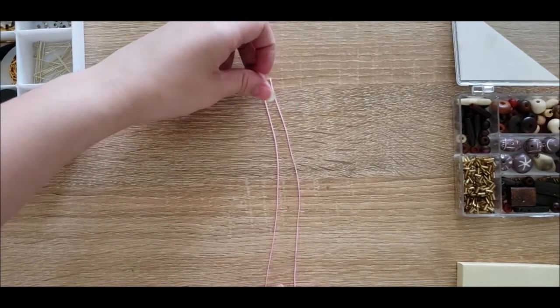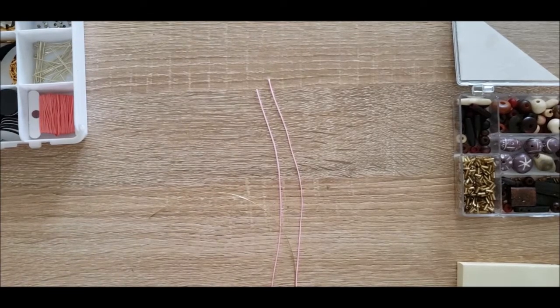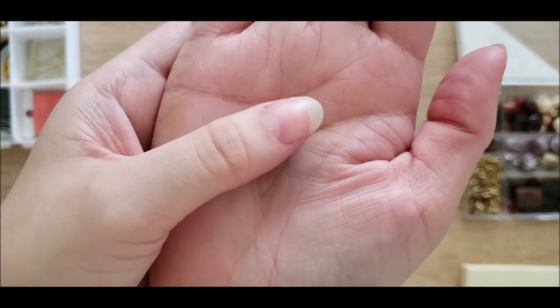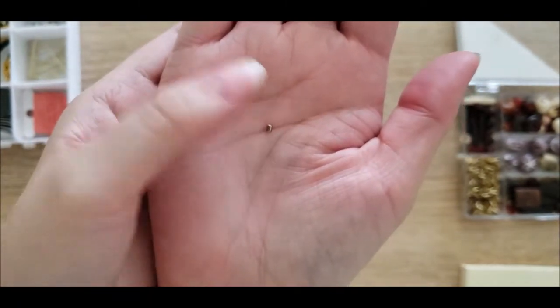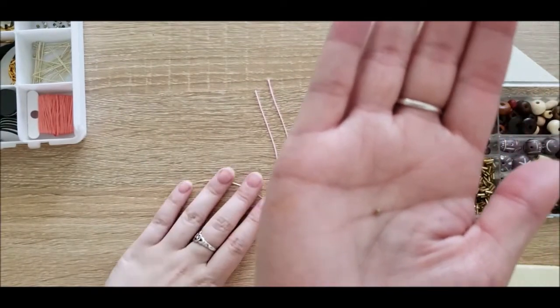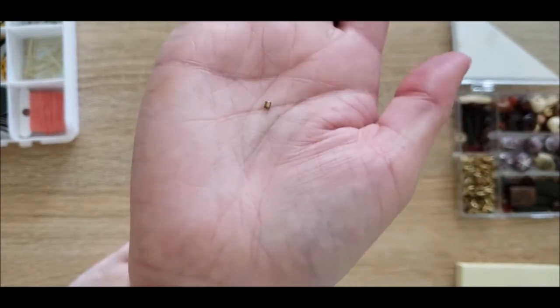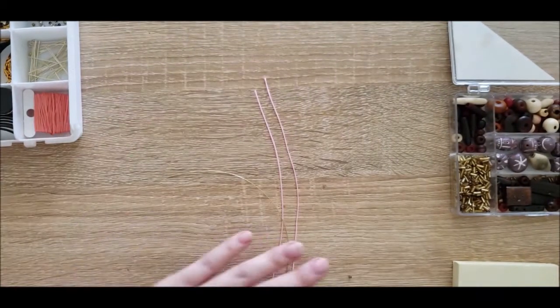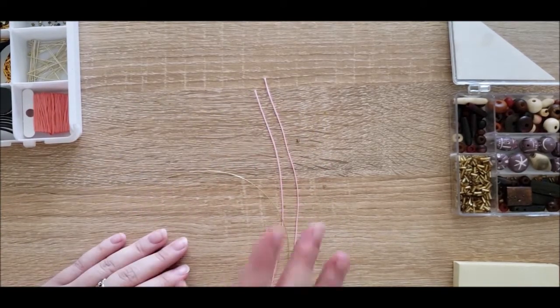You're also going to need these crimp beads. I got a lot of these off Amazon in a big set. I did test to make sure that everything fit in these. This is just a standard size and they're very tiny, so I guess be careful. I need two of those, one for each end.